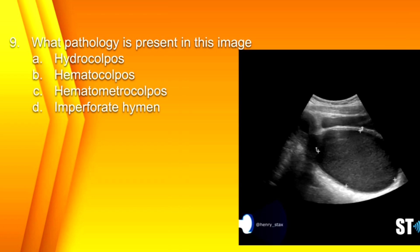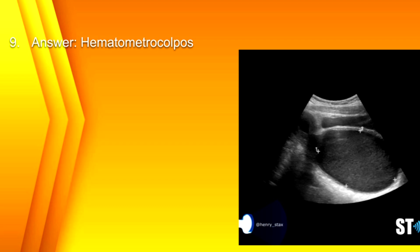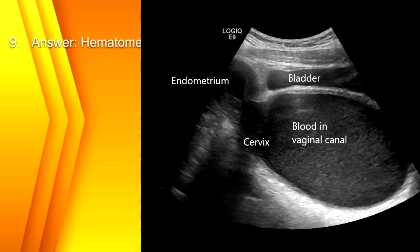Number 9. What pathology is present in this image? A. Hydroculpus, B. Hematocolpus, C. Hematometroculpus, or D. Imperforate hymen? The answer is B. Hematometroculpus. Here you can see the bladder. This is the vaginal canal filled with echogenic fluid, and there's also fluid within the endometrial cavity — that would be hematometroculpus. The echogenic fluid suggests blood.